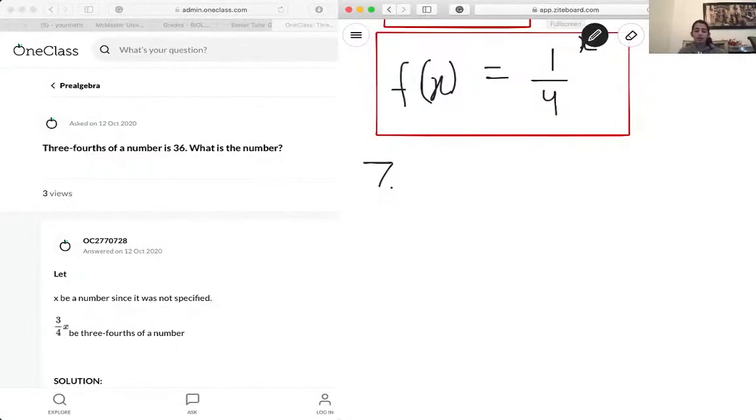So essentially, when we're asked this type of question, always remember to have a variable in mind because that number you can set as your variable when you're solving, because you have to solve for that number.